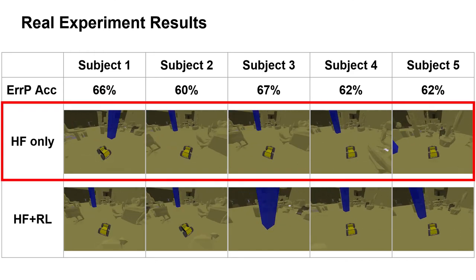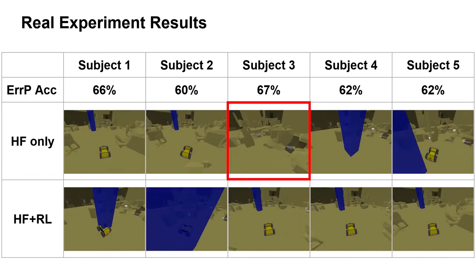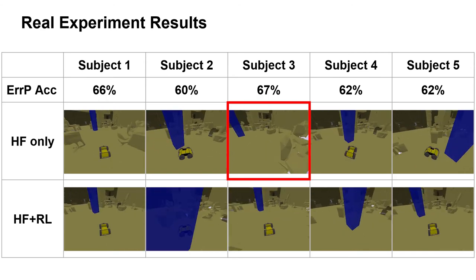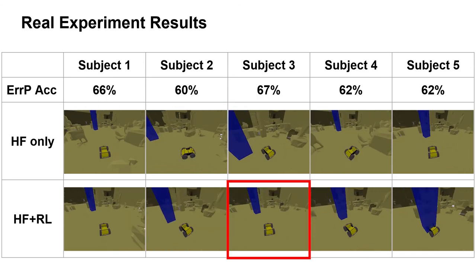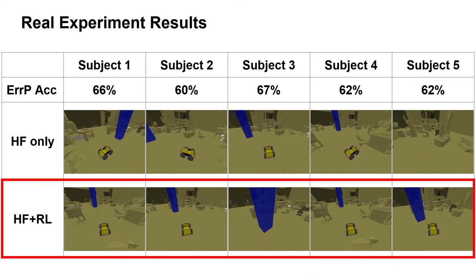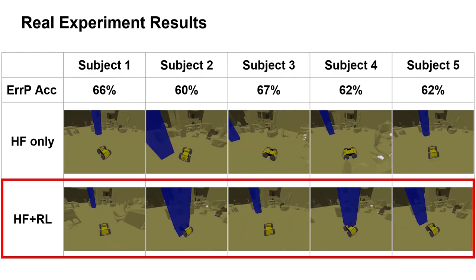Our method is robust to suboptimal HF policies. For example, the HF policy learned for subject three collides with obstacles, yet it still provides sufficient guidance for RL learning from sparse reward. The resulting policies are optimal for all five subjects.